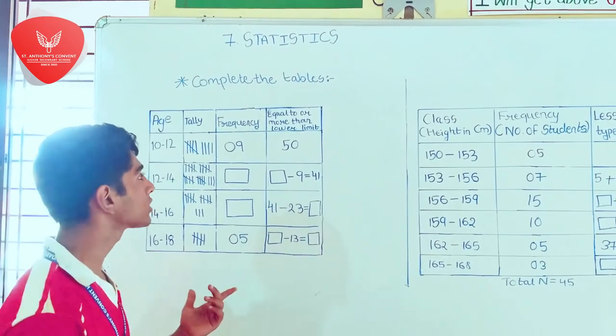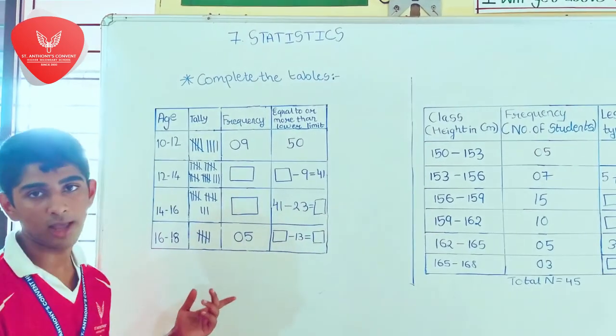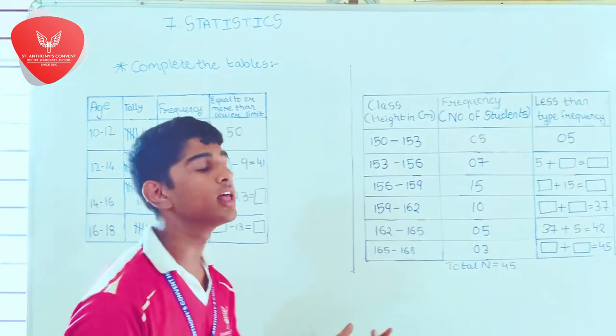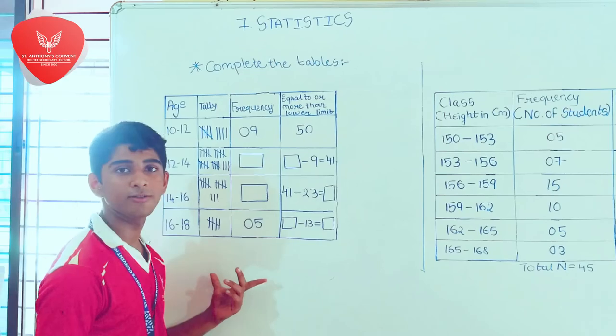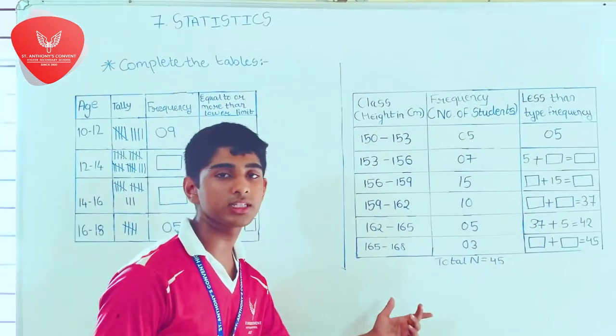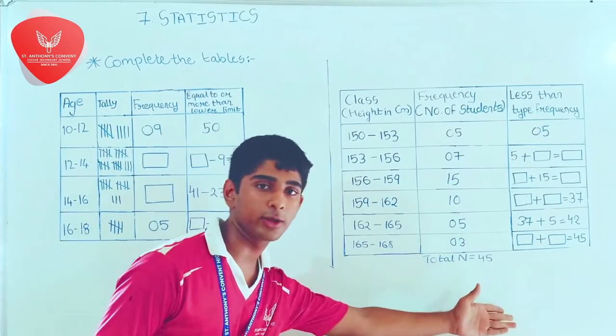Here are two sums. First one is more than type frequency table and second one is less than type frequency table. In the more than type frequency table we subtract the frequencies and in the less than type frequency tables we add the frequencies.